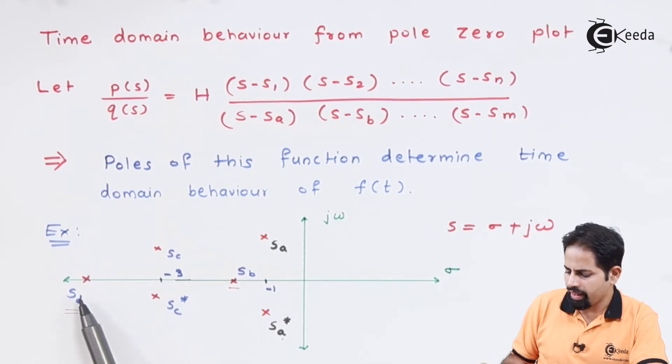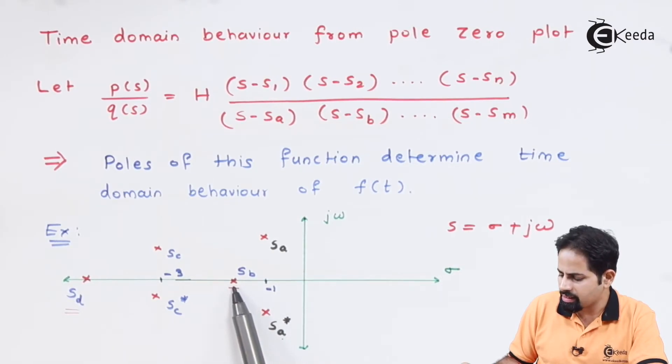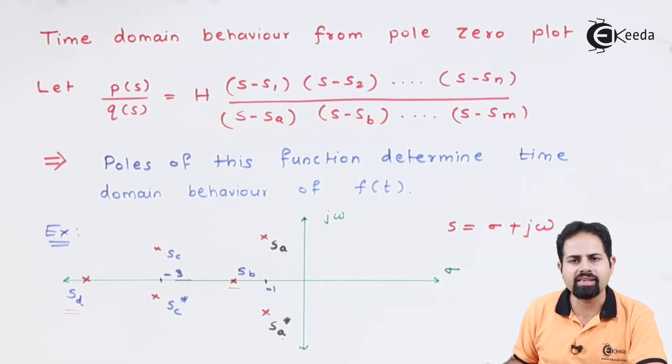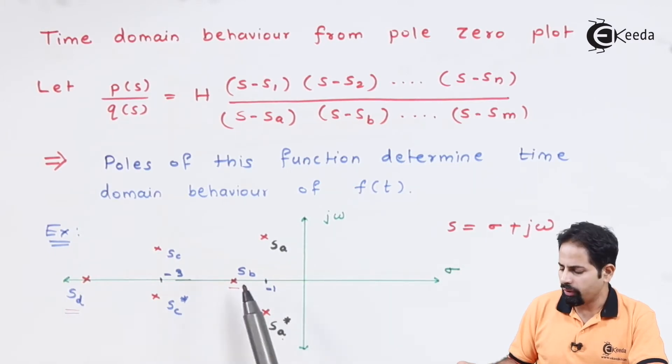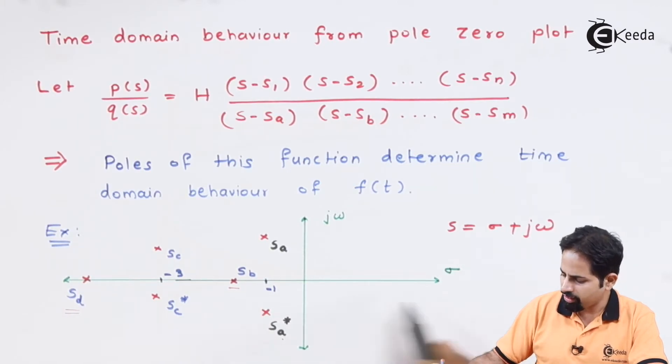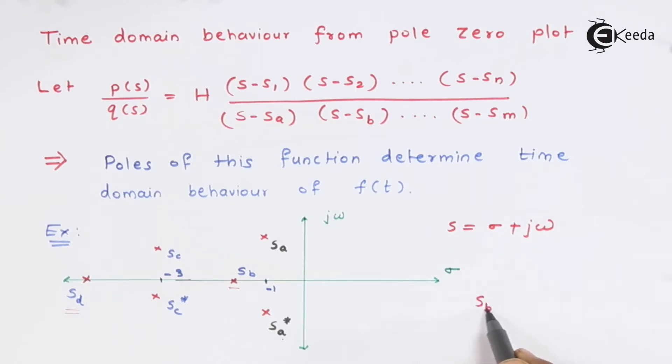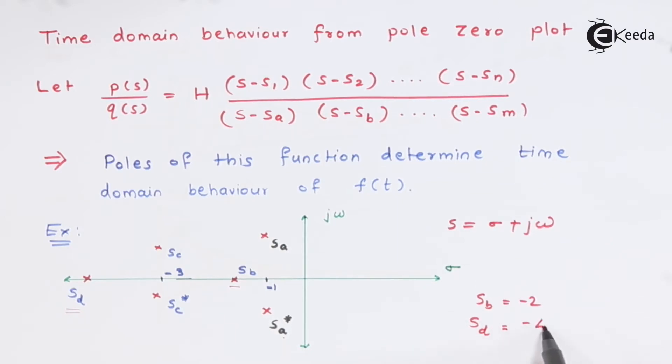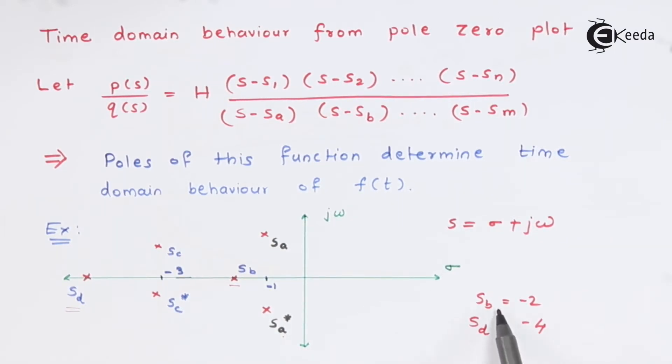Now what about these poles SB and SD? You can see that this SB pole is nearer to the omega axis and it has only real part. So the pole is something like s minus two. This SB can be minus two and SD suppose it is equal to minus four. So for this SB will decrease with minus two rate e raised to minus two t and this SD is going to decrease with double the rate.